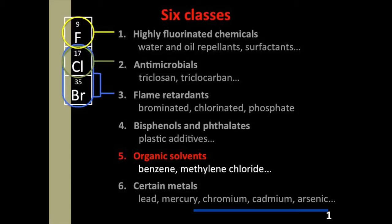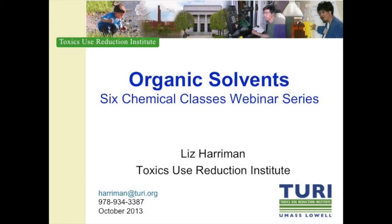This presentation is the fifth in a series of six different chemical classes of concern and focuses on organic solvents. It also includes some chemicals based on the halogens noted in the first three classes, particularly chlorine, but also bromine and fluorine. This webinar covers a very broad class of substances used as solvents, focusing on organic solvents — which has nothing to do with organic or pesticide-free agriculture, but refers to chemicals based on carbon.